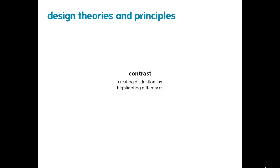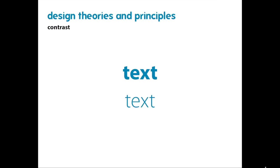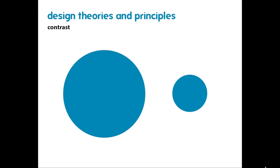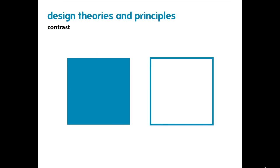Contrast is the concept of creating distinction by highlighting differences. These differences can take many forms: different weights of text like bold versus light, different shaped objects like big versus small, or even color — something full versus something empty. By using contrast, you create distinctions between objects so they become highlighted, and our eye immediately recognizes these two things are different without any words or text needed to communicate that idea.